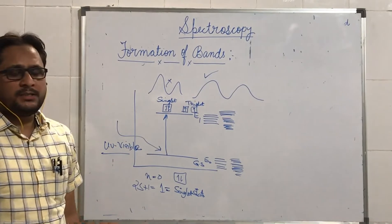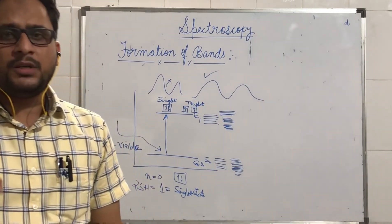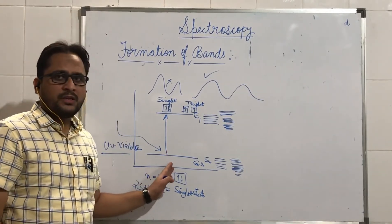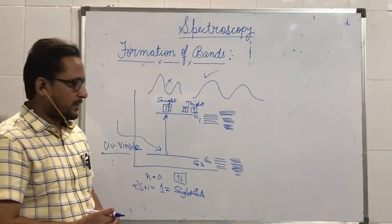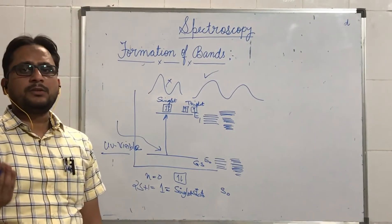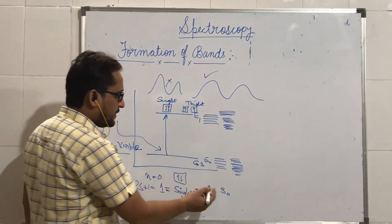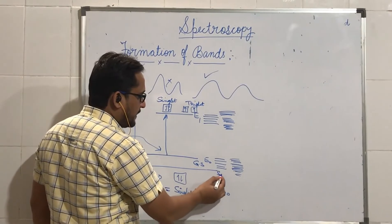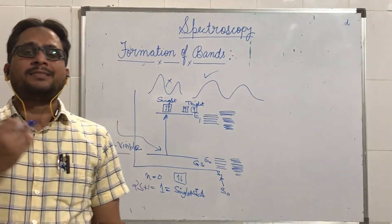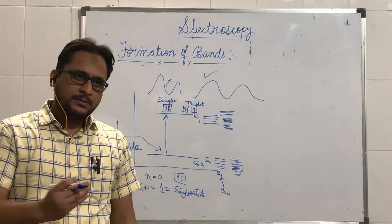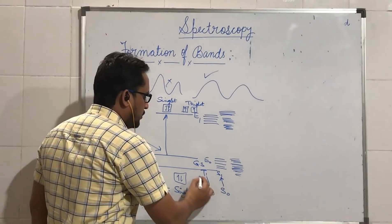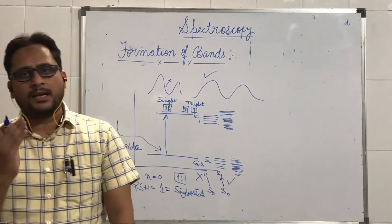Out of these two possibilities, in UV-visible spectroscopy only one is allowed: the transition from the ground singlet to the excited singlet state. E0 can also be denoted as S0 because the electrons are in the singlet state. So from the singlet ground state S0, electrons can be promoted to the singlet excited state S1. The transition from the singlet ground state S0 to the triplet excited state T1 is not allowed — S0 to T1 is forbidden, but S0 to S1 is allowed.